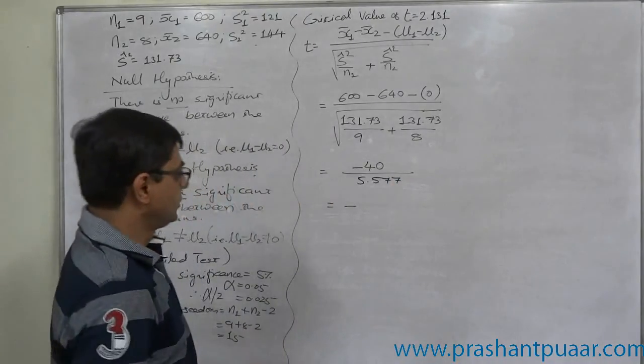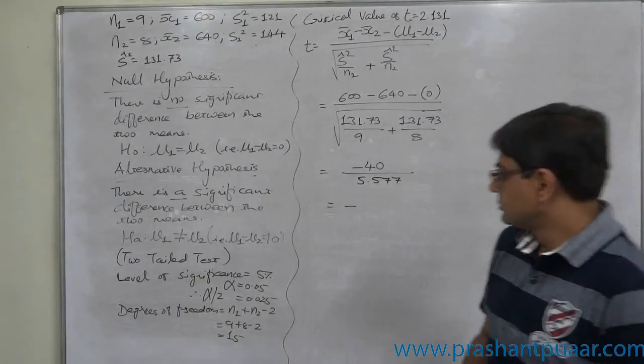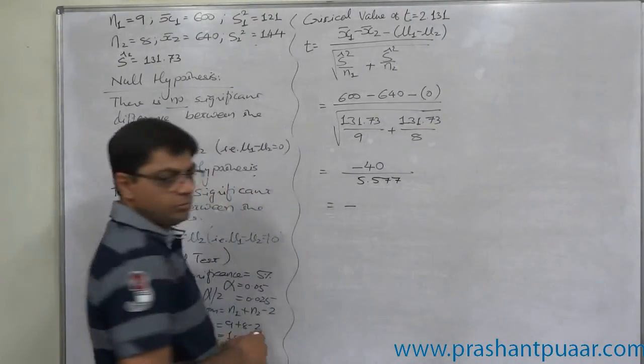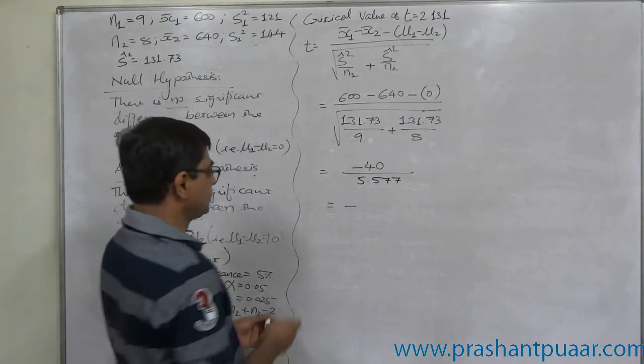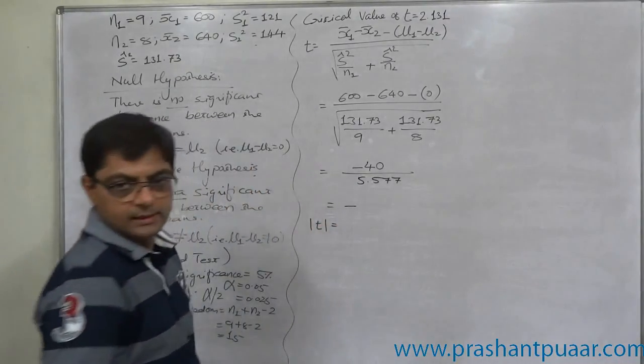So numerator is negative, t is also negative, but we will use modulus: 7.17.